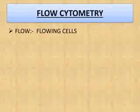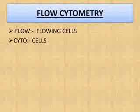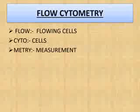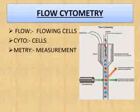The first thing you need to know is the meaning of flow cytometry. 'Flow' basically means that cells are in a flowing state. 'Cyto' obviously means cells, and '-metry' indicates measurement. So through this technique we are going to measure cells in a flowing state.